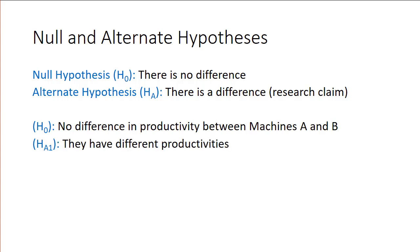The alternate could be they are different, they have different productivities. Or we could even be more specific and say Machine A is more productive than Machine B or Machine B is more productive than Machine A.